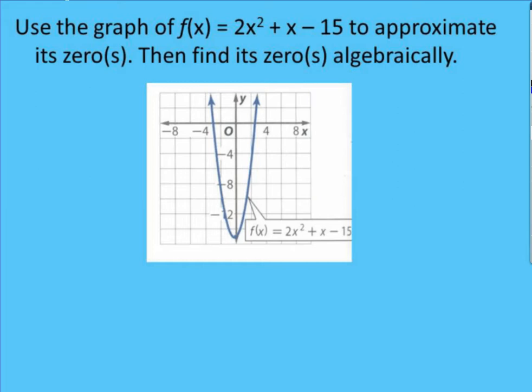So if we take a look at the graph, we want to approximate the zeros from the graph, and then we're actually going to find them algebraically. So if we look at the x intercepts, we have one here and we have one here. If we approximate those, we could say that we have an x intercept at approximately negative 3 and a little bit more than 2 but less than 3, so about 2 and a half.